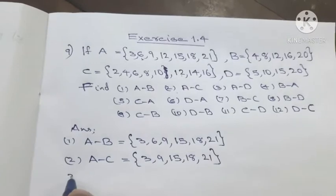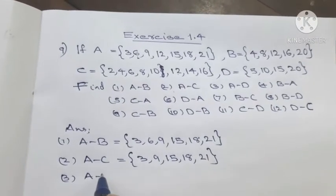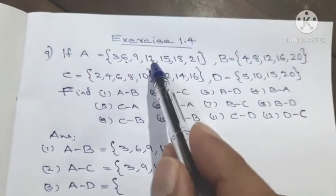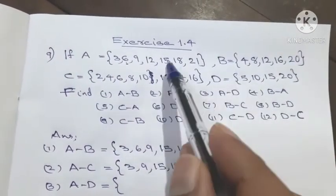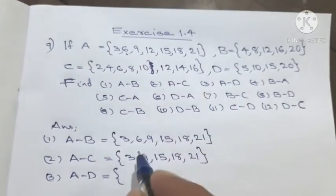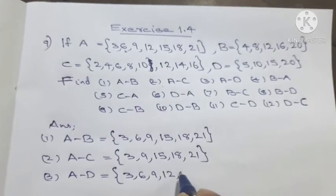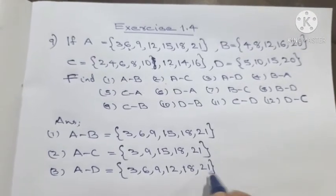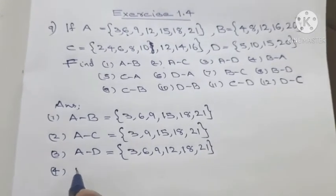Third is A minus D. For A minus D, we take the elements of A and remove those in D. A minus D equals the set {3, 6, 9, 12, 18, 21}.